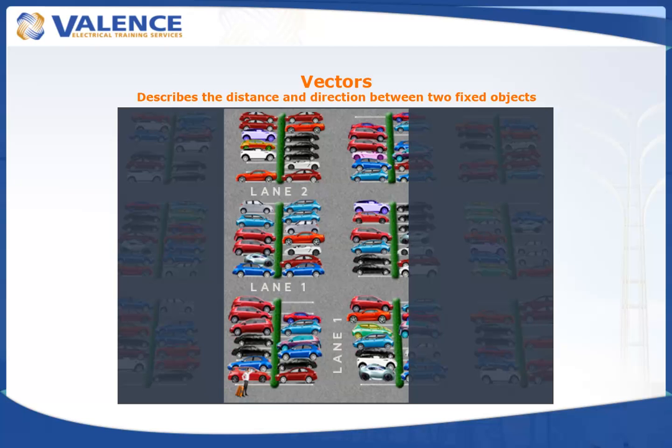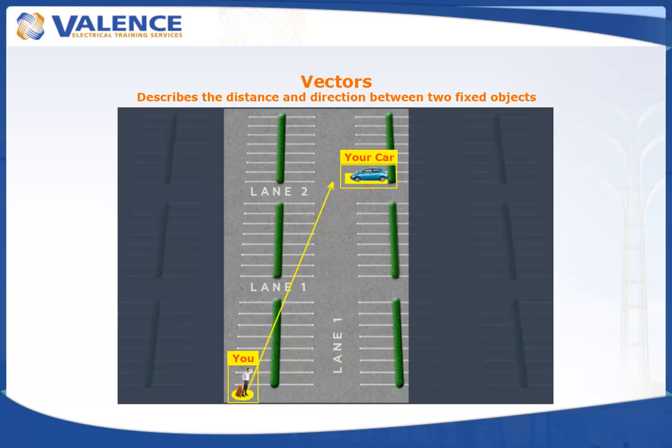This simple map shows three vectors that will get you to your car. You can turn right and then left with the horizontal and vertical vectors, or you can walk directly to your car with the resultant vector.